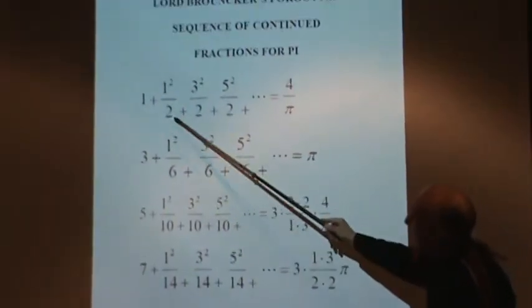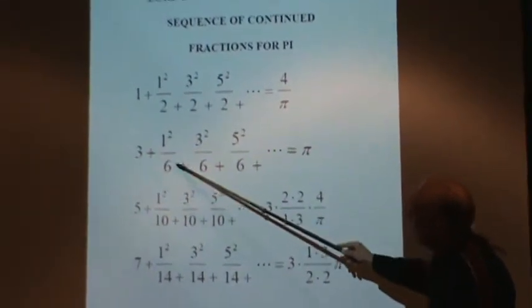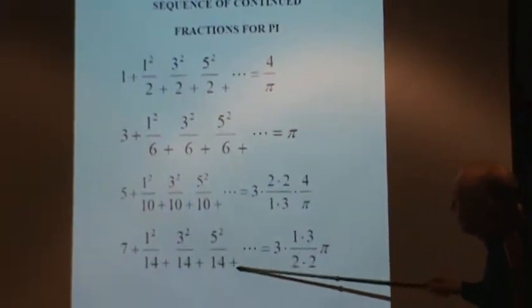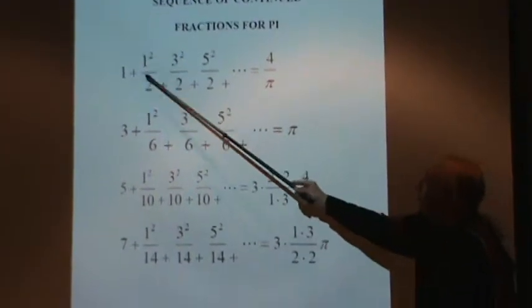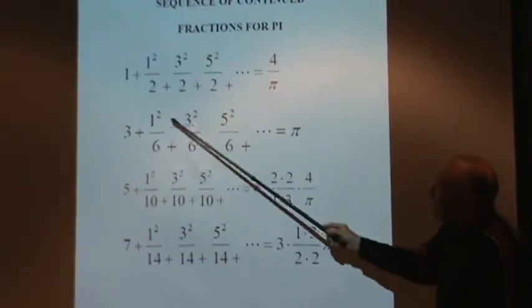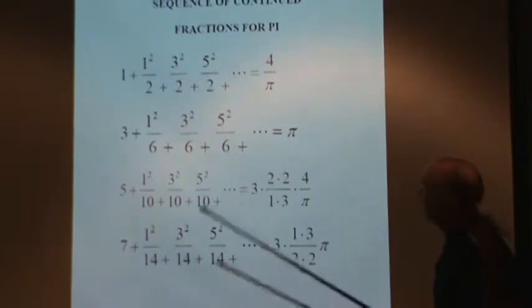And then the denominators are all twice that number. So 5 becomes 10, 7 becomes 14. All the denominators stay the same, and all the numerators increase as squares of odd numbers. So they have an interesting pattern.